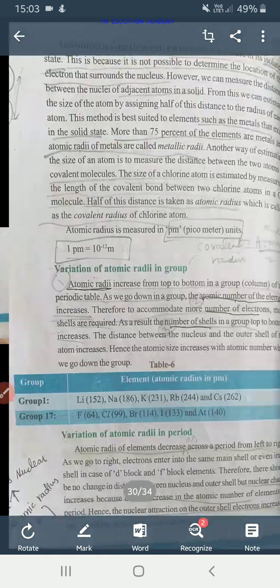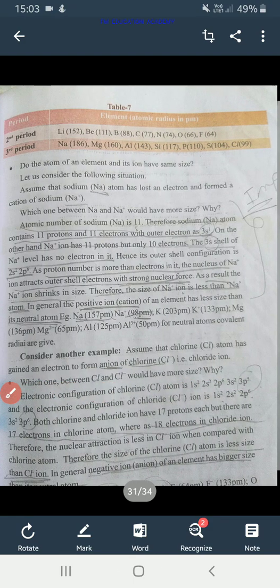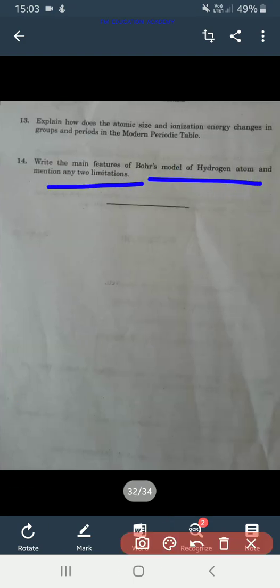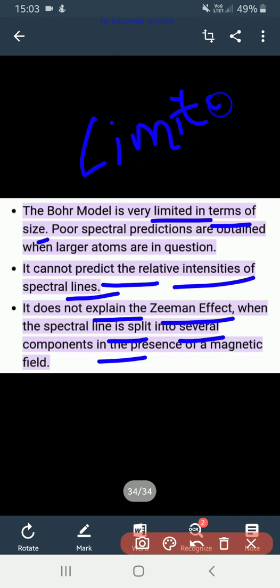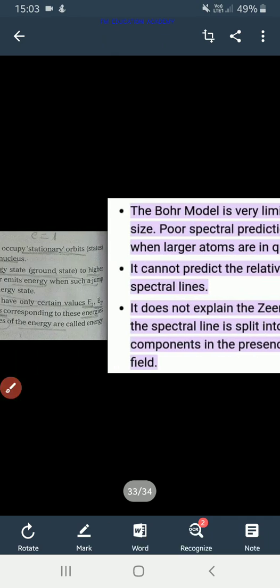Next we have write the main features of Bohr's model of hydrogen atom and mention any two limitations. This also I explained in PDF. So Bohr model is very limited in terms of size. Then we can write it cannot predict the relative intensities of spectral lines. It does not explain Zeeman effect. And spectral line is split into several components. These are the limitations of Bohr's model of hydrogen atom. Next it also asked about the explanation. This is the explanation. Niels Bohr proposed that electrons in an atom occupy stationary orbits of fixed energy in discrete distances from the nucleus. All this you have to write for Bohr's model of hydrogen atom.